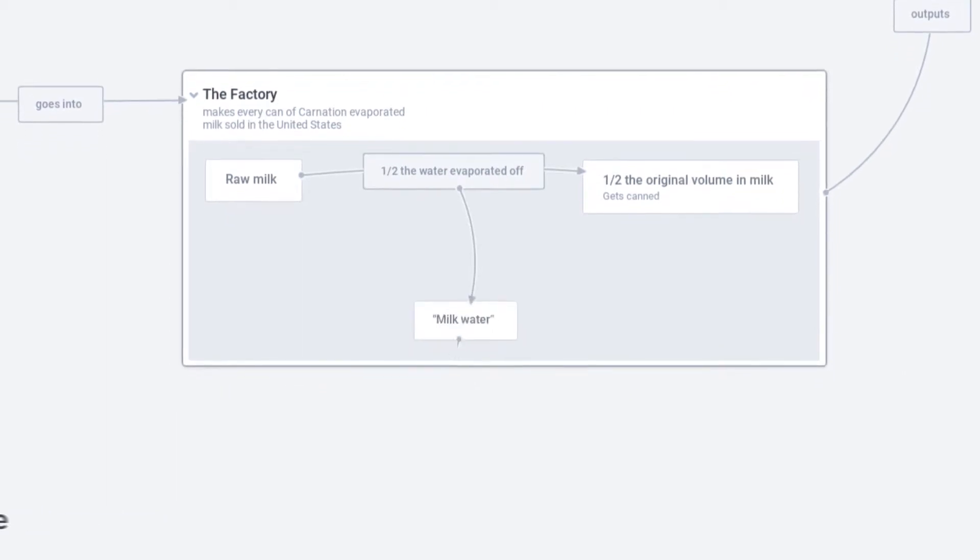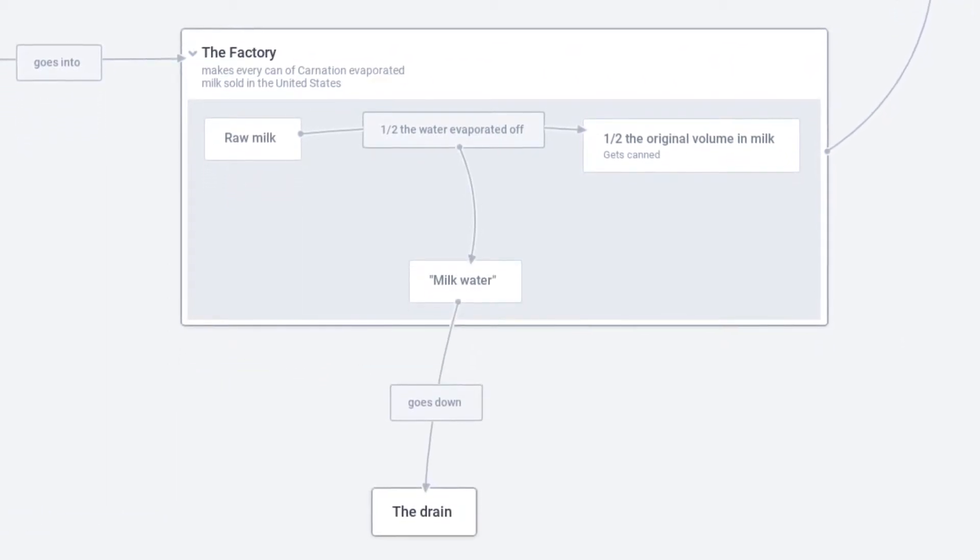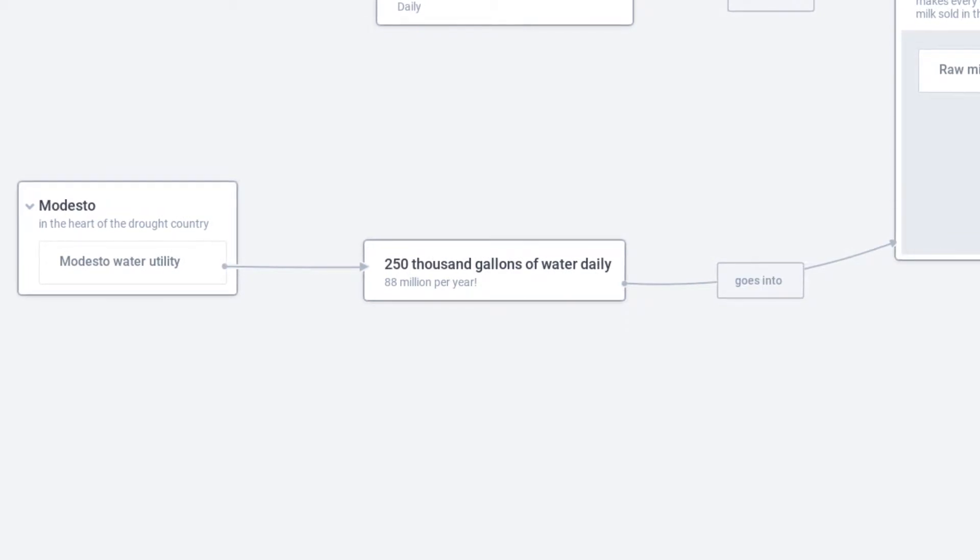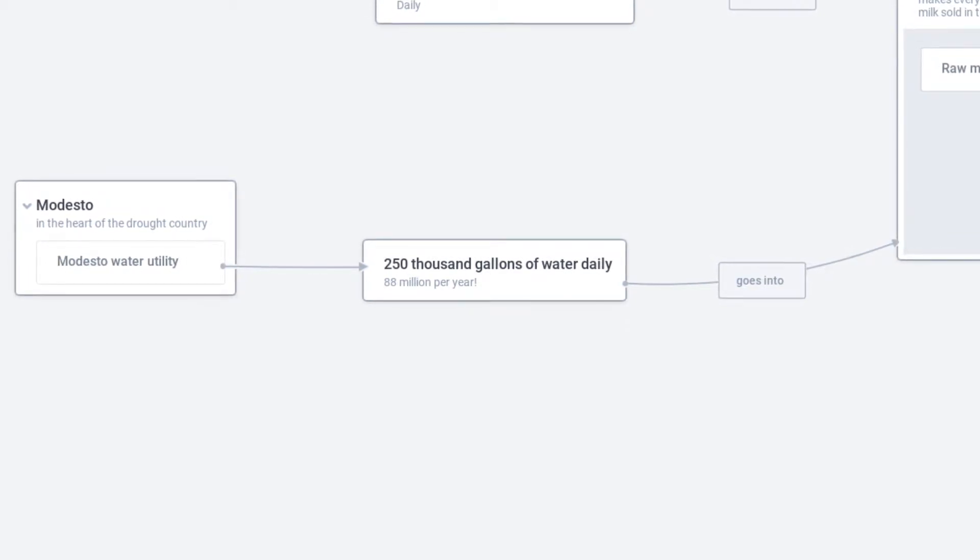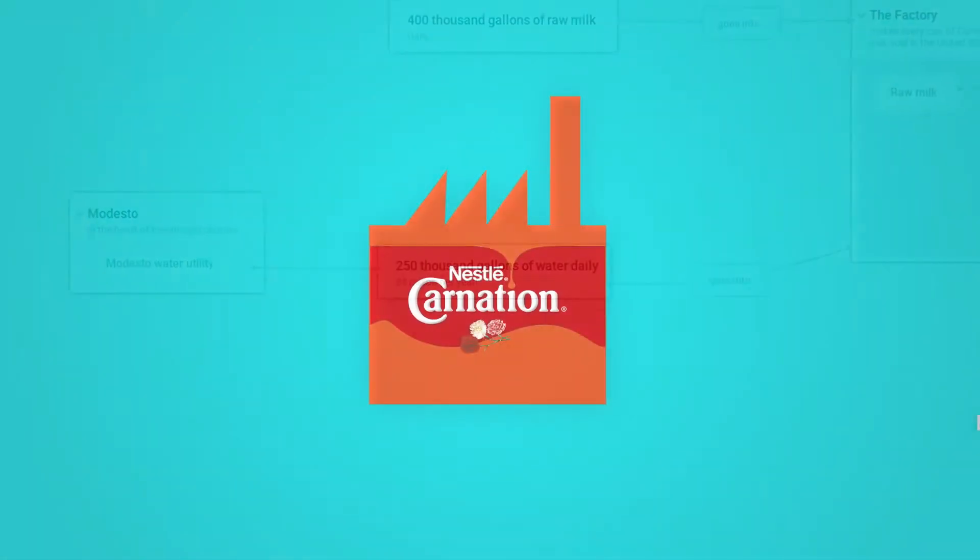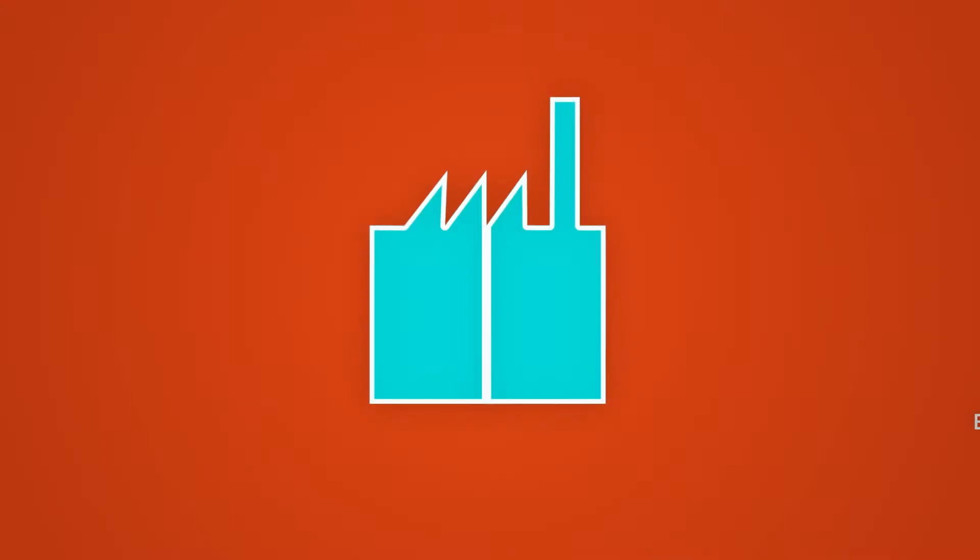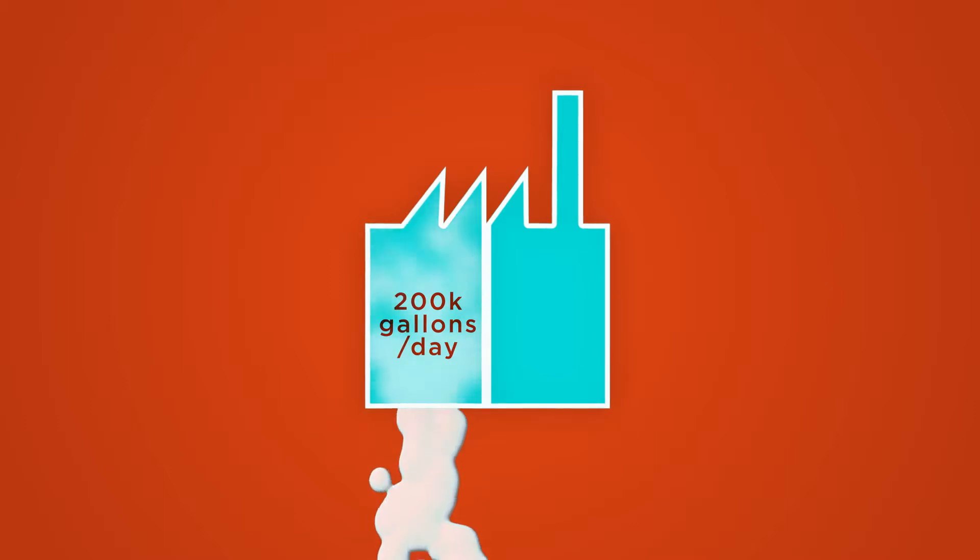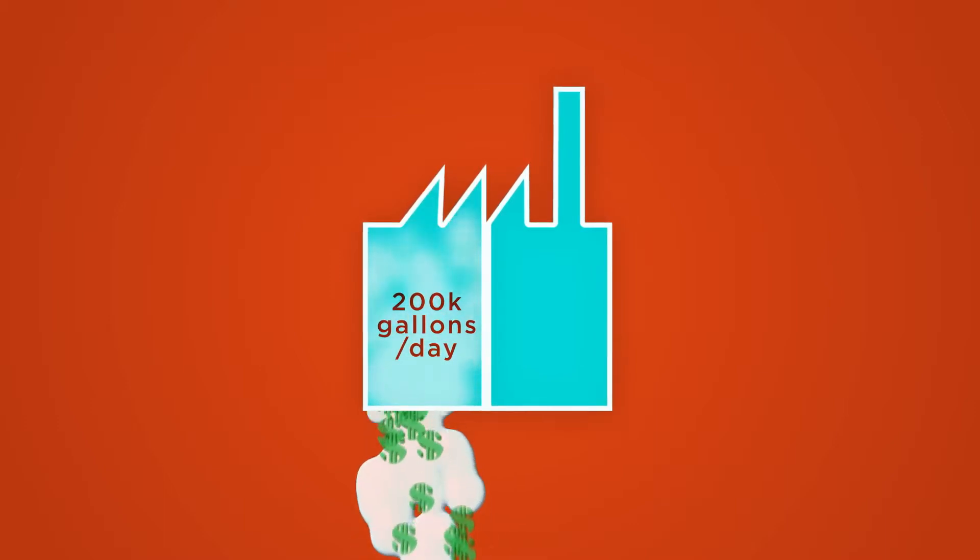They call the evaporated water milk water. They also have been buying 88 million gallons of water a year. 250,000 gallons of fresh water a day to run the factory. So in one part of the factory, they're evaporating 200,000 gallons of water a day, the milk water, and throwing it in the sewer and paying, of course, to throw it in the sewer.